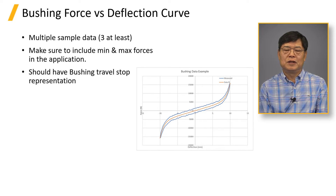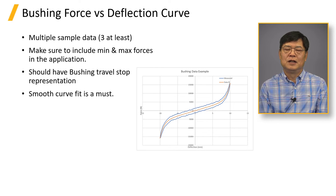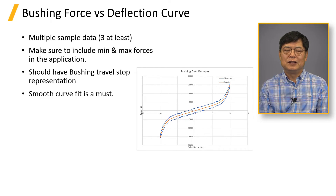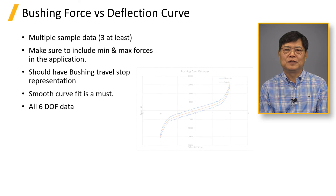As shown in the plot, measured data comes in with noise. The raw data cannot be used directly — it should go through curve fitting. This is the most time-consuming process in vehicle modeling. A vehicle model has at least 30 bushings counting only one side, and each bushing has 6 force versus deflection curves. This means at least 180 curve fittings are required.